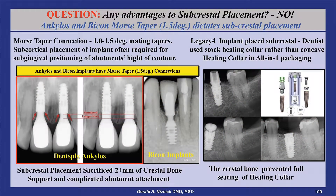This slide demonstrates the disadvantages of subcrestal placement of implants. While this can be done with any two-piece implant, the Morse taper connection of the Ankylos and Bicon implants often requires subcrestal placement in order to drop the height of contour of the abutment below the soft tissue for aesthetics. This is because their friction fit abutments emerge from the implant as a narrow post and require several millimeters of length to create an acceptable emergence profile.